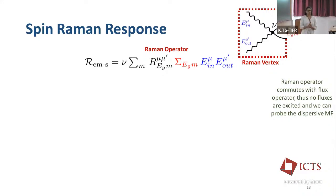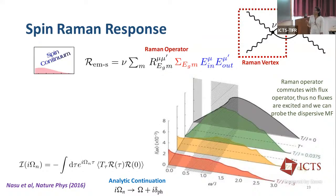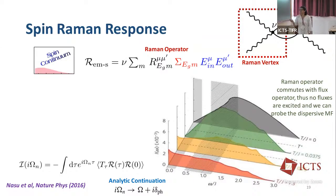Now we calculate the Raman response due to these magnetic degrees of freedom. We write down the Raman operator where spins are coupled to photons with coupling strength mu, and the Raman tensors are the same as before. One thing easy to check is that this Raman operator commutes with the flux operator, so no fluxes are excited in this probe — we are directly probing the Majorana fermions. The resulting correlation function gives a continuum of excitation, which is the Raman response at p=0, and this is the continuum that our phonon peak will interact with.